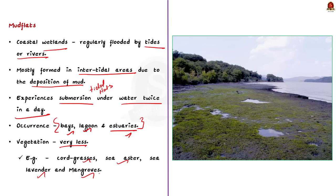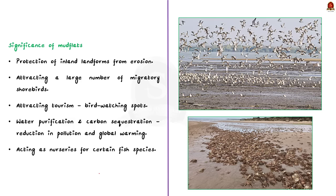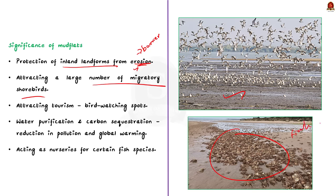Now let us see the significance of mud flats. Firstly, mud flats protect inland landforms from erosion by acting as a barrier obstructing waves from the sea. Secondly, mud flats attract a large number of migratory shorebirds because the intertidal mud flats house a variety of species like crabs, fish and mollusks which form the food base for migratory birds. Because of this, mud flats often serve as significant bird watching spots.